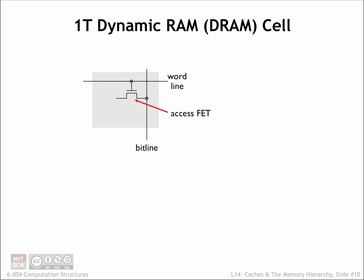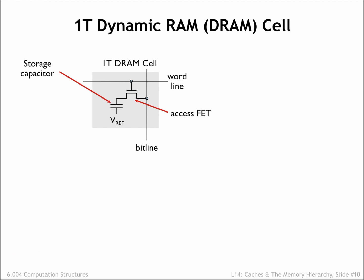We'll need at least one MOSFET to serve as the access FET so we can select which bits will be affected by read and write operations. We can use a simple capacitor for storage where the value of the stored bit is represented by voltage across the plates of the capacitor. The resulting circuit is termed a dynamic random access memory cell.